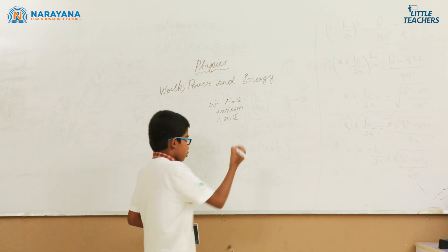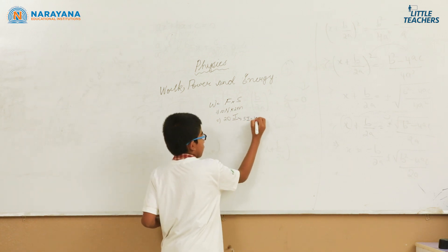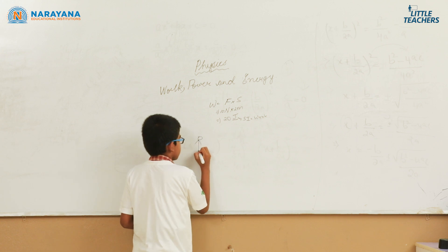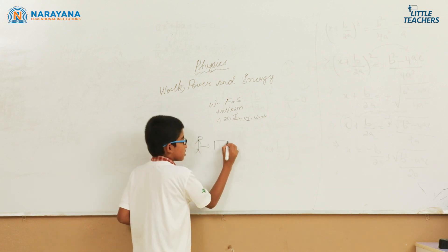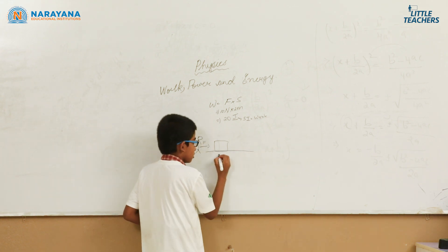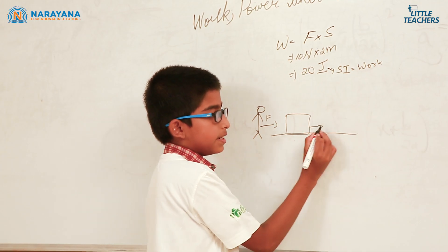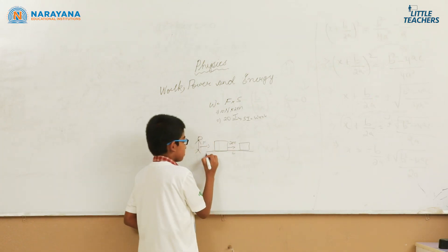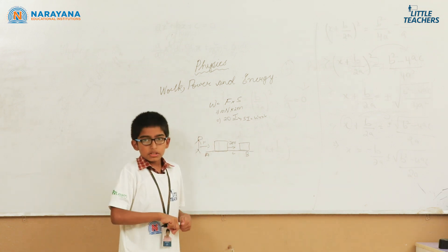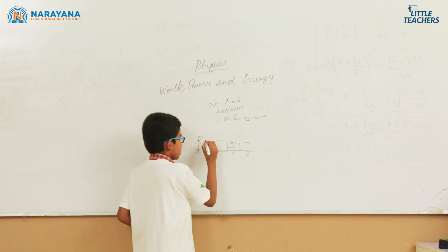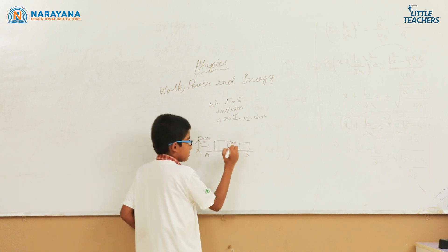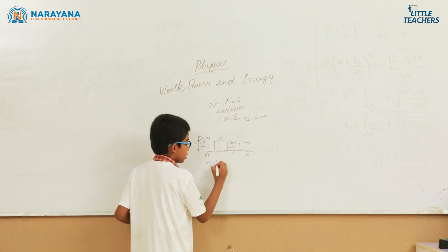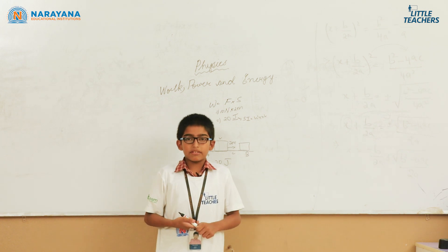Here, there is a human being applying force on an object. When he was applying force on it, the object changed its displacement — it moved about 2 meters from point A to point B. The work done by the human being: force was 10 Newtons and displacement was 2 meters, so the work done is 10 multiplied by 2, which equals 20 Joules.